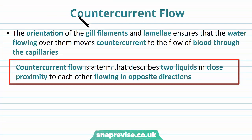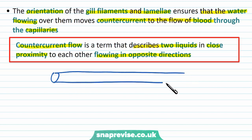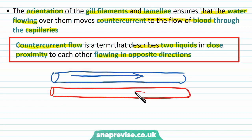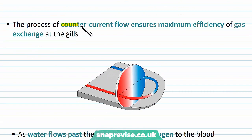An important mechanism that fish use is called the counter-current flow mechanism. The gill filaments and the lamellae are oriented in such a way that water passes over them counter-current to the flow of the blood — meaning it runs in the opposite direction to the blood even though it's parallel. Counter-current flow is defined as two liquids that are in close proximity to each other flowing in opposite directions. One vessel carries water travelling in one direction, while directly below in close proximity another vessel carries blood travelling in the opposite direction. The counter-current flow is designed this way to ensure gas exchange has maximum efficiency.